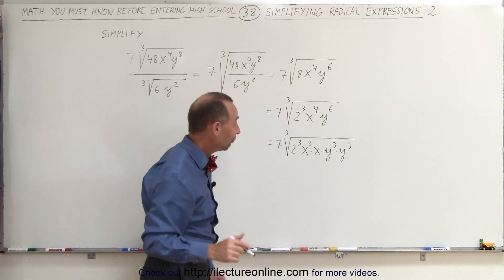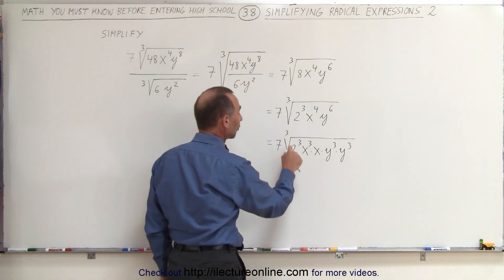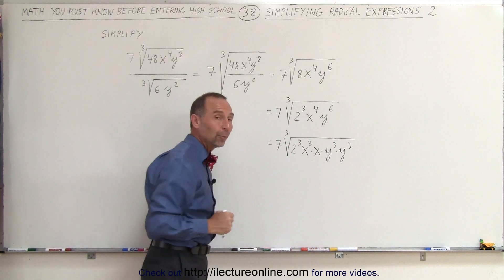The reason why we wrote it in that form is that if we have the cube root of something cubed, that can come outside the radical symbol.